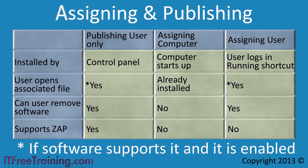When you configure Group Policy to deploy software, the first decision you will need to make is whether the software should be published or assigned. I will start with publishing an application, as this has the least amount of options and thus is the easiest to understand.